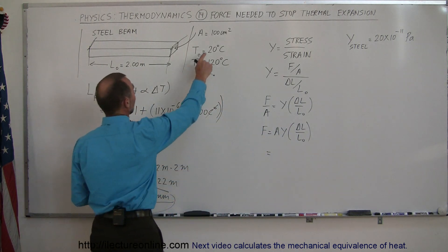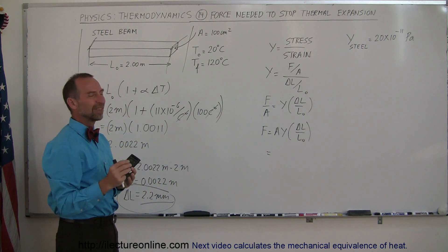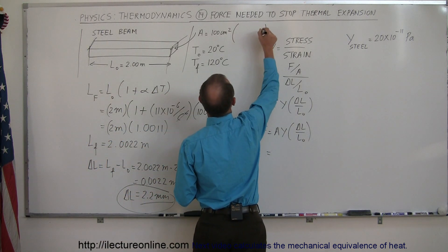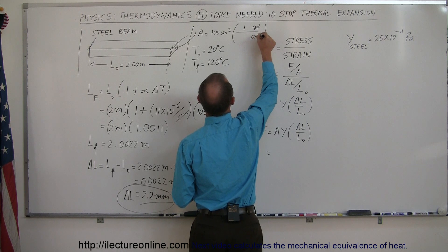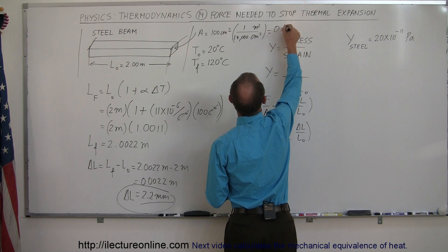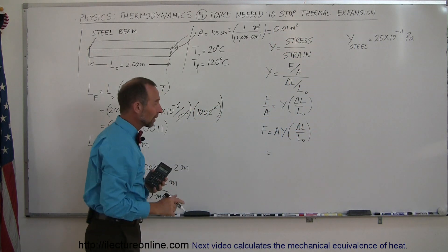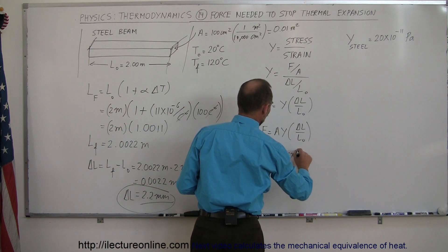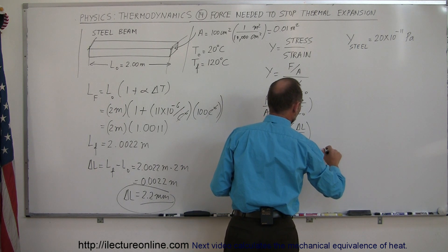Cross-sectional area we said was 100 square centimeters. In a square meter we have 10,000 square centimeters, so this would be equal to 0.01 meters squared. We always want to use standard units, so that's 0.01 meters squared times Young's modulus, which is 20 times 10 to the 10th.